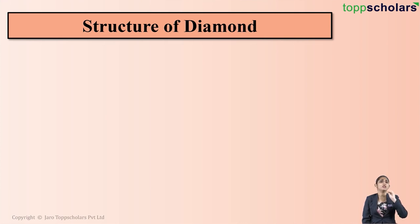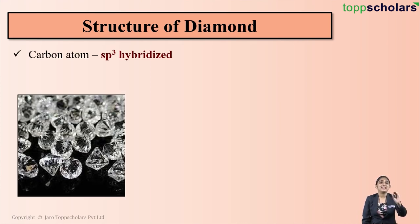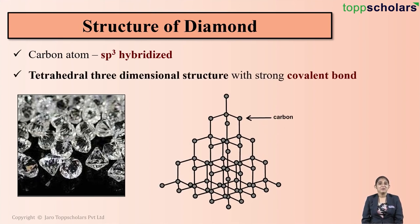If we talk about the structure of diamond, in diamond each carbon atom is sp3 hybridized, which means that each carbon atom is covalently bonded to the neighboring four carbon atoms. Over here you can see each carbon atom is covalently bonded to four neighboring carbon atoms, which results in the formation of a tetrahedral three-dimensional structure.